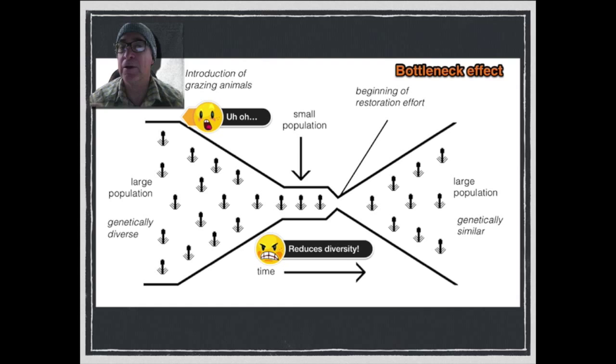At some point in time, whether man steps in or nature, it allows that small population to grow again. But the problem with the numbers is they're not genetically diverse. In other words, their tools in their tool belt, the genes, are not going to provide the necessary support for them to actually thrive. Because if the environment changes very quickly, they may be in for some problems.